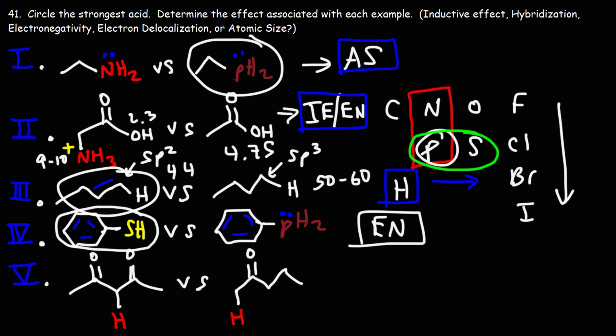For number five, we're looking at alpha hydrogens. The alpha hydrogens next to a single ketone have a pKa of 19. The alpha hydrogen positioned between two ketones that are 1,3 apart has a pKa of 9 — much more acidic. It's not hybridization because both hydrogens are next to an sp2 carbon. It's not atomic size because all the elements are the same. It's not electronegativity for the same reason. So the answer is either the inductive effect or electron delocalization.